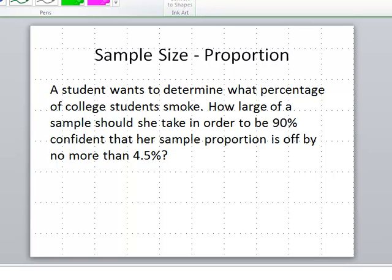The first one I'm going to show you is for a proportion. A student wants to estimate the percentage of college students who smoke, and we're asked for how large of a sample. That is the clue that here we're looking for a sample size and not to estimate. Also, we don't have a sample to work with. 90% is the level of confidence, and we want to be off by no more than 4.5%. That means that the margin of error is 0.045.